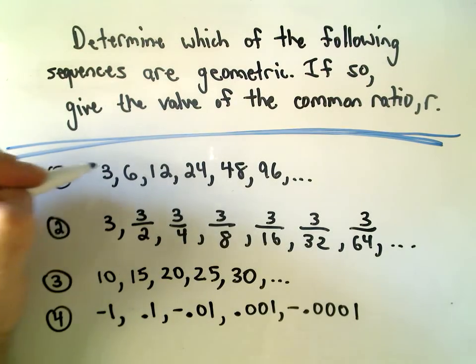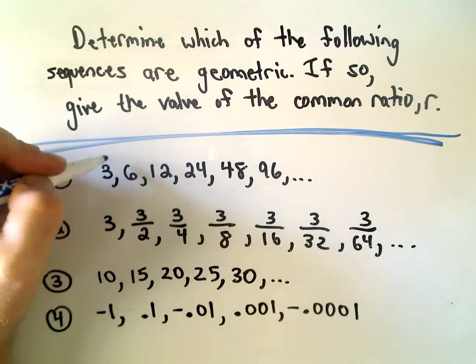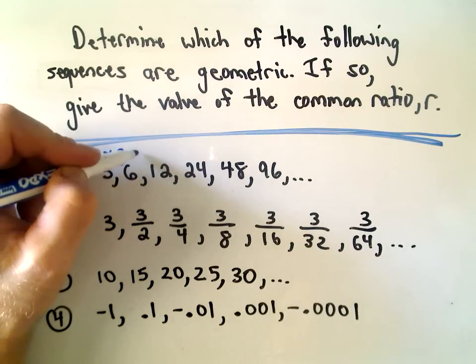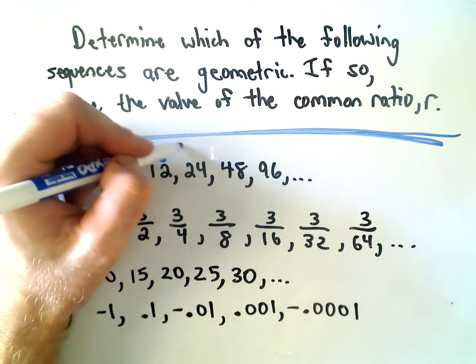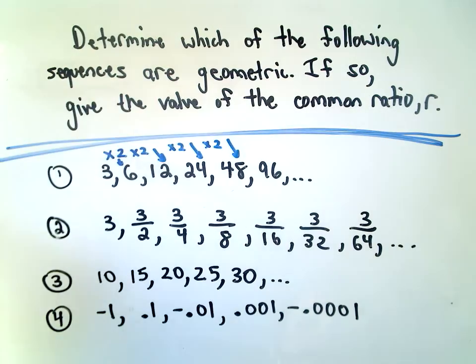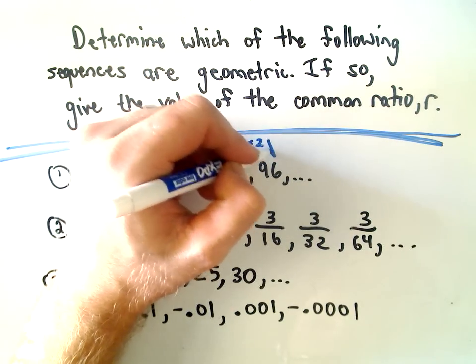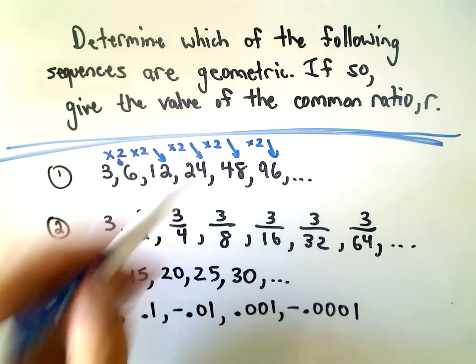Hopefully you see the pattern. When you're talking about geometric series, it has to do with multiplication or division. Notice if I multiply 3 by 2, I get the next number, 6. If I multiply 6 by 2, I get 12. If I multiply 12 by 2, I get 24. If I multiply 24 by 2, I get 48. Likewise, if I multiply 48 by 2, I get 96.